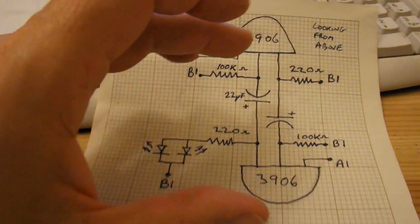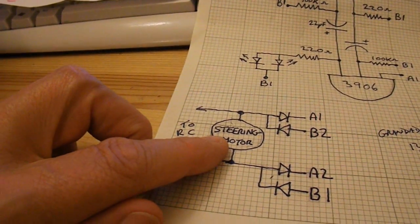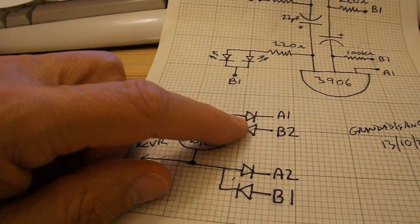Two circuits that you want to work alternatively depending on which way the steering motor is turning. So what we've got is two pairs of diodes facing opposite directions.